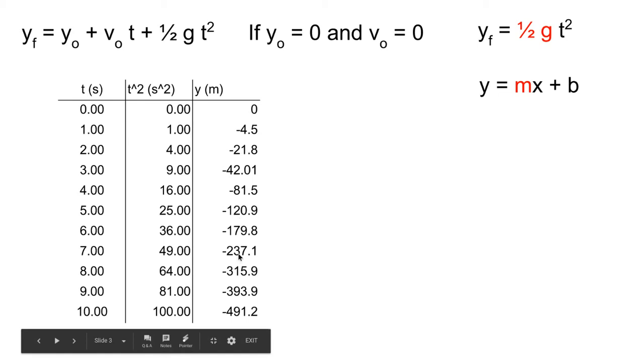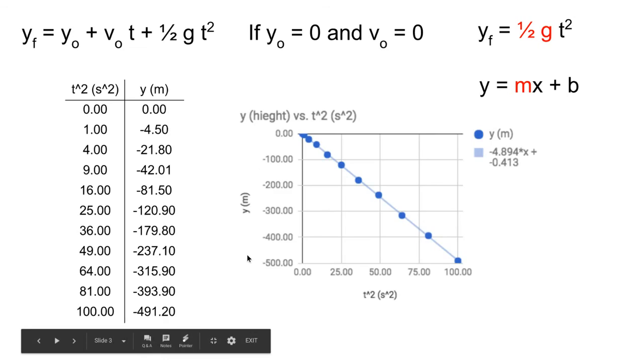If you plot those, you will have a graph that is linear. It's beautiful how it works. I love it. But on top of that, if you notice, the slope of this line, negative 4.894, is one-half g. Let me show you what that means.